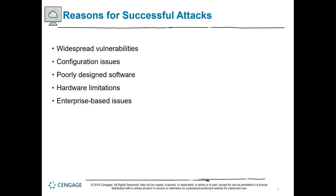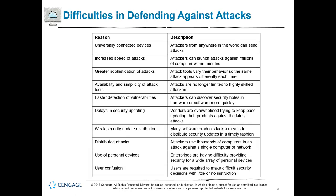Why is it so difficult to defend against attacks? One major reason is universal connected devices — essentially everything is connected to the Internet. You now have to secure thermostats, refrigerators, computers, and phones. Once those devices are on the Internet, the entire global community can target them. Attacks can come from anywhere, any day, at any time — it's not a Monday-through-Friday, 8-to-5 type of job.